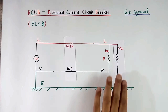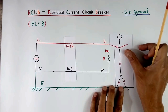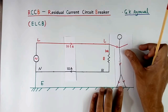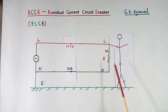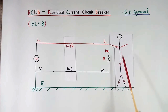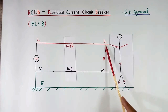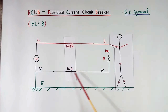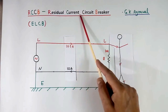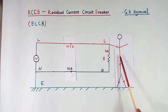Now suppose instead of a resistance, there is a human body. This person will get a shock because current will flow through the body. Again this current will flow through the line but not through the neutral, so the line current will be more than the neutral current. There will be a difference in current, or some residual current will flow, because of which the circuit breaker will trip and will protect us.